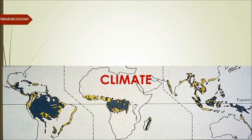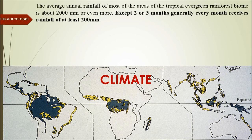In terms of climate, two key parameters are rainfall and temperature. The average annual rainfall in tropical evergreen rainforest areas is about 2,000 millimeters or more — about 200 centimeters — which is the baseline for all areas under this biome. Except for two or three months, generally every month receives about 200 millimeters of rainfall, making it clearly a heavy rainfall area.